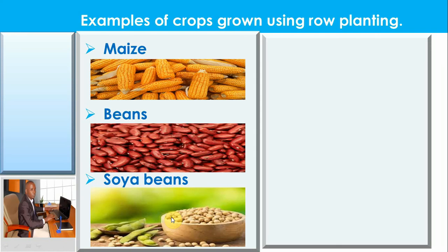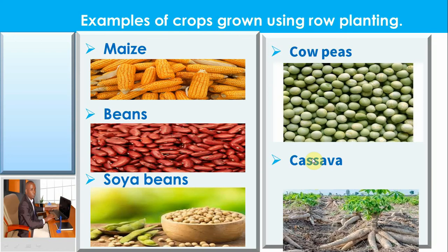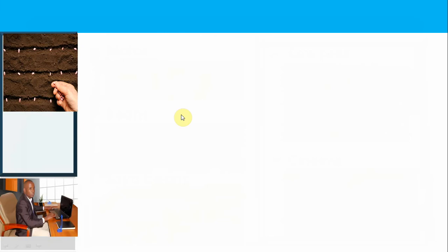We also have cassava, another crop planted in rows — in lines. There are very many other examples of crops that can be grown using row planting method. So if they ask you to give examples, you can name these. Now, having looked at examples of these crops, let us consider the advantages of planting crops using row planting.